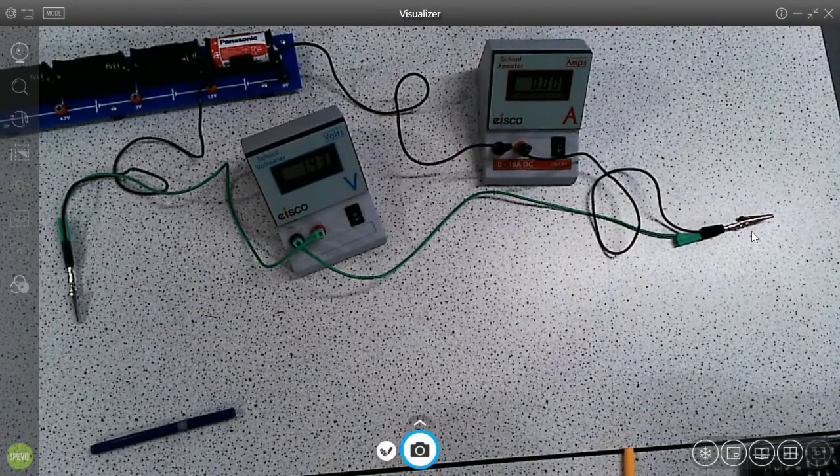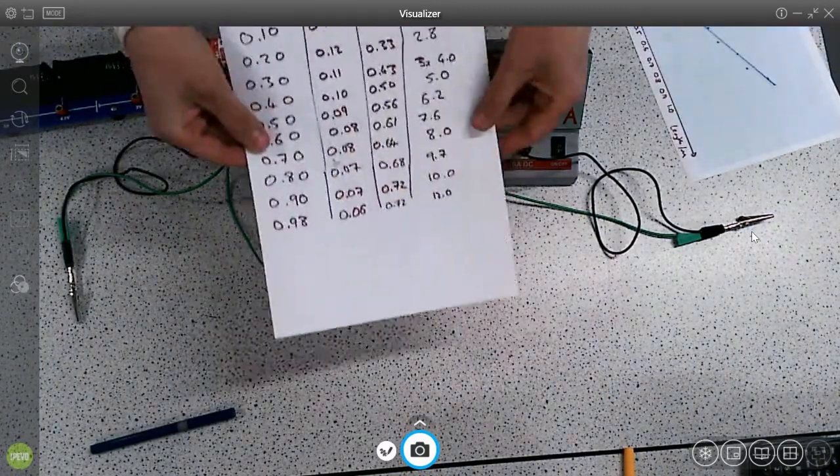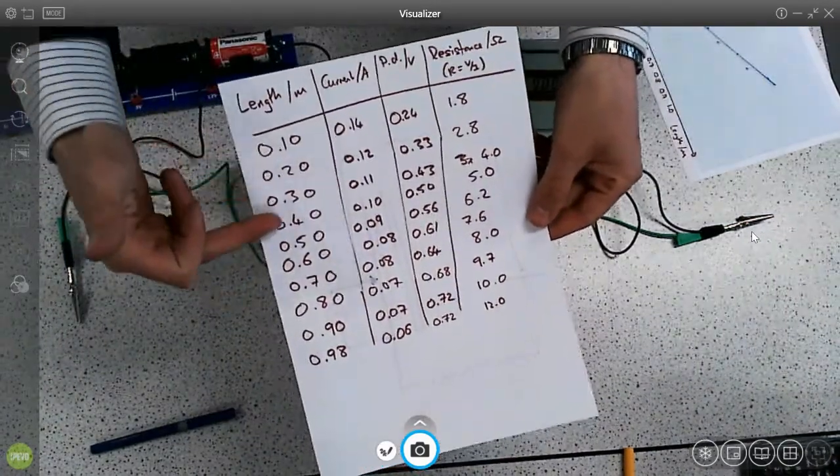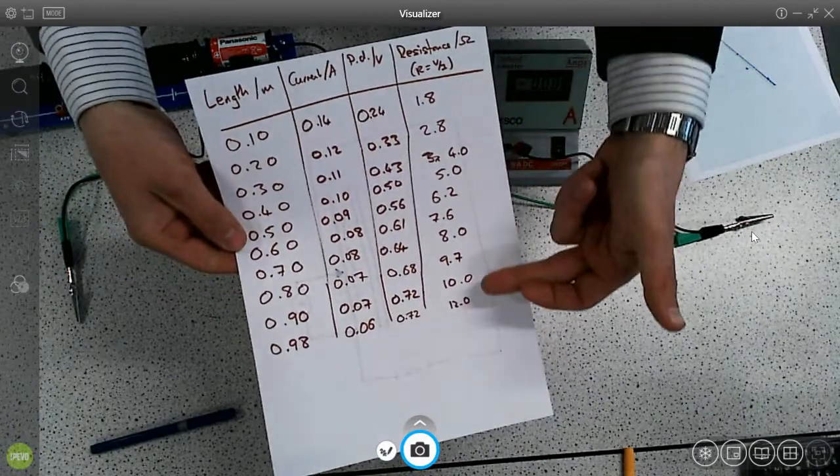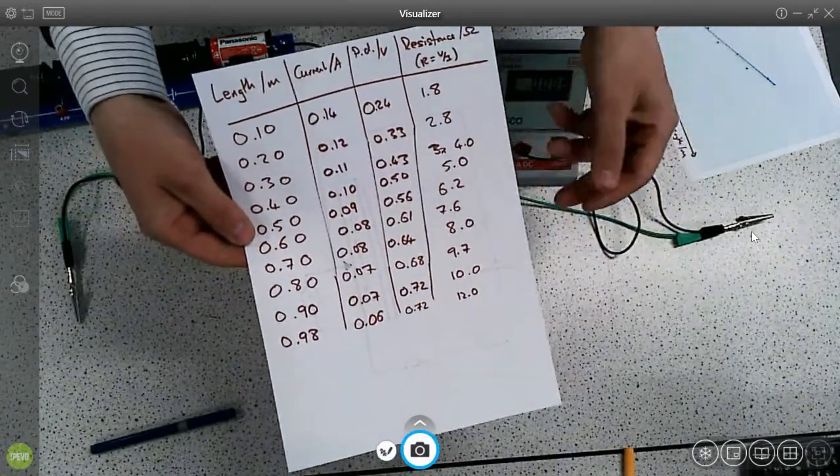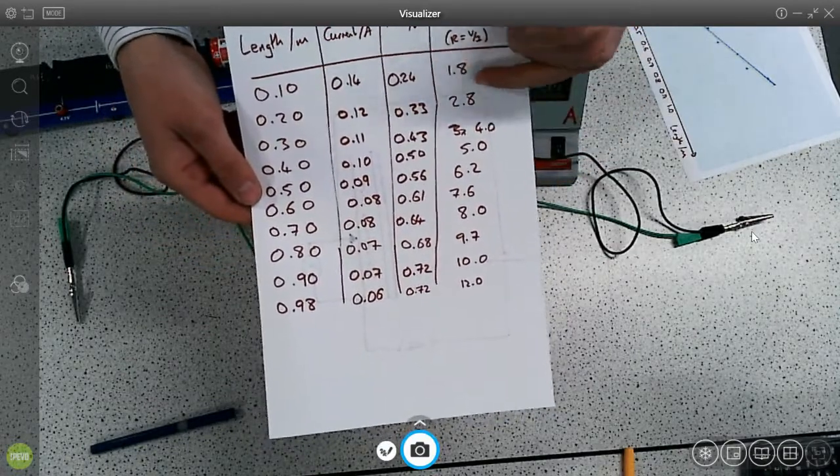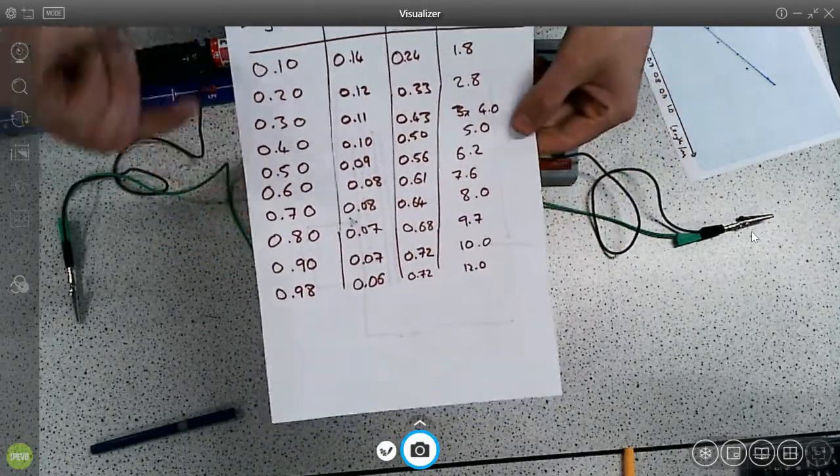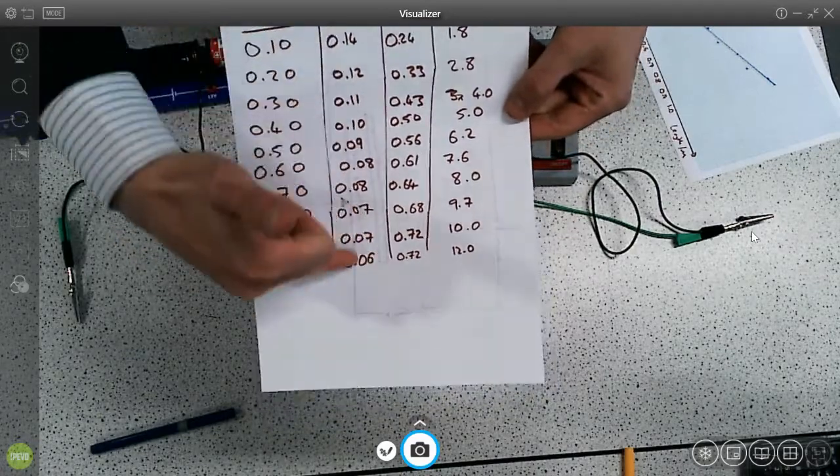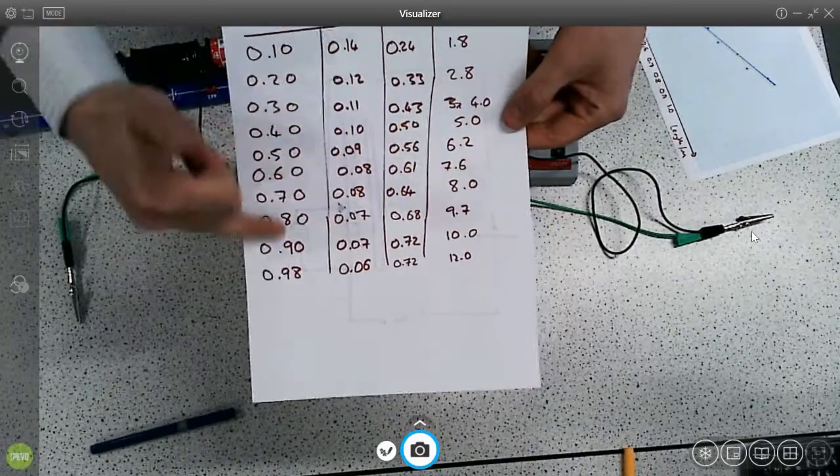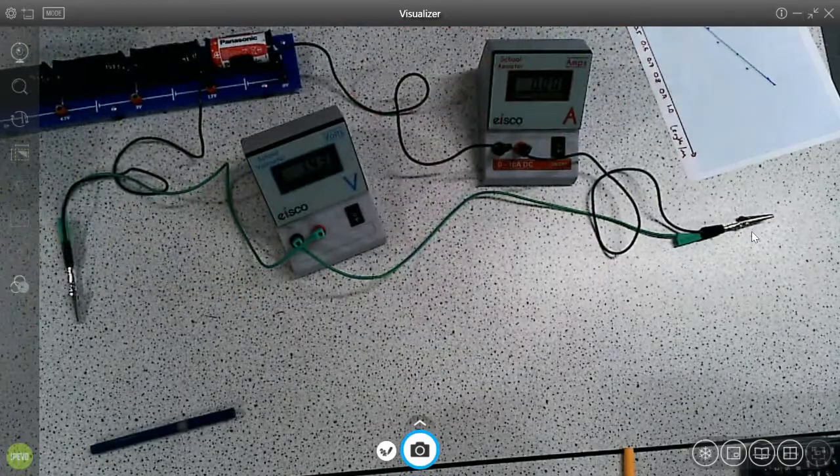So I've calculated all my resistances. Very simple, V over I. And you should encourage students to have consistency in the number of decimal places in the results table. So one decimal place here, and I've used two decimal places everywhere else.